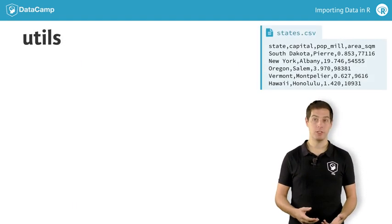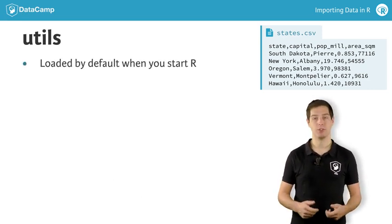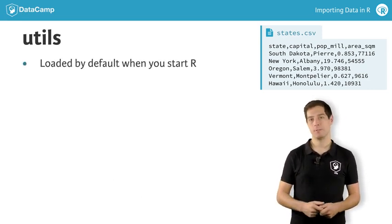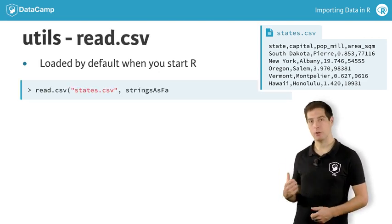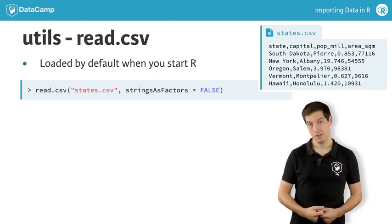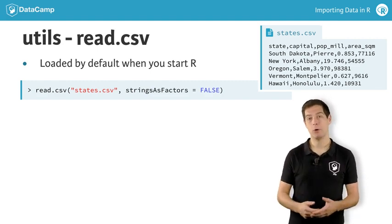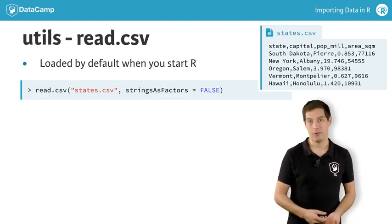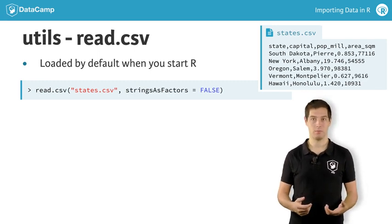These functions belong to the utils package, which is loaded by default when you start R. More specifically, we'll need the read.csv function. The first argument of read.csv is the path to the file you want to import in R. If the file is in your current working directory, simply passing the filename as a character string works.